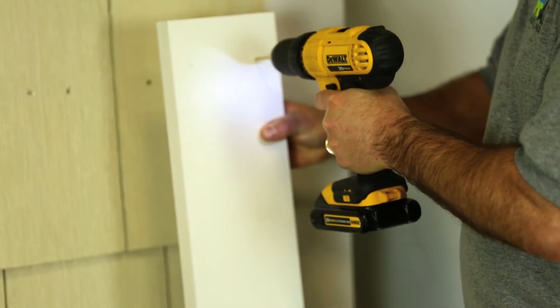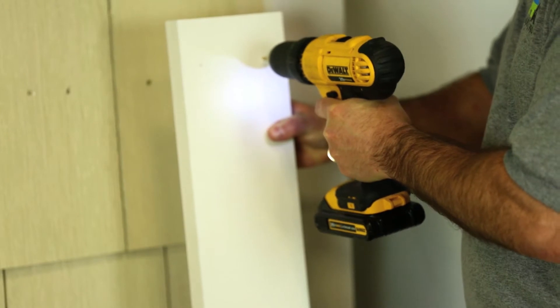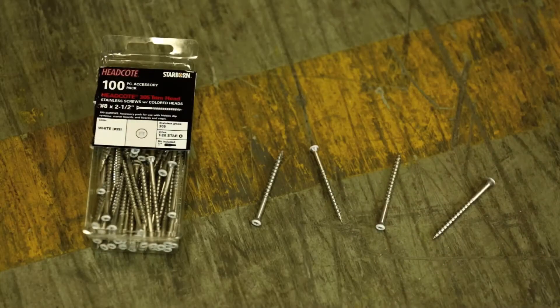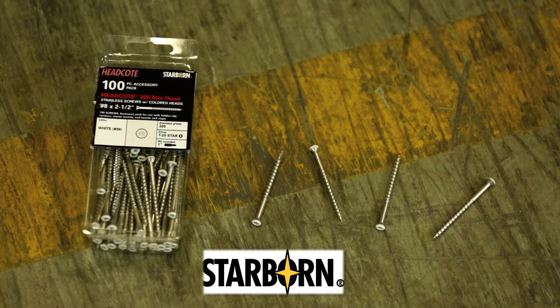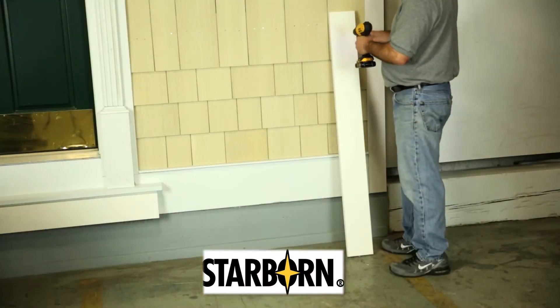During cooler temperatures, annular threads are recommended. Trim screws number 6, number 8, and number 10, as well as Starborne or Cortex screws are also acceptable.